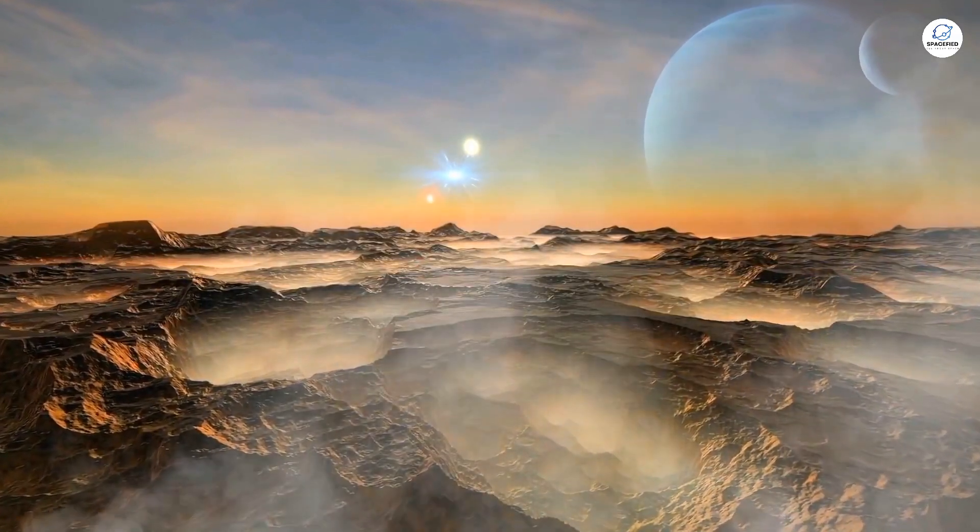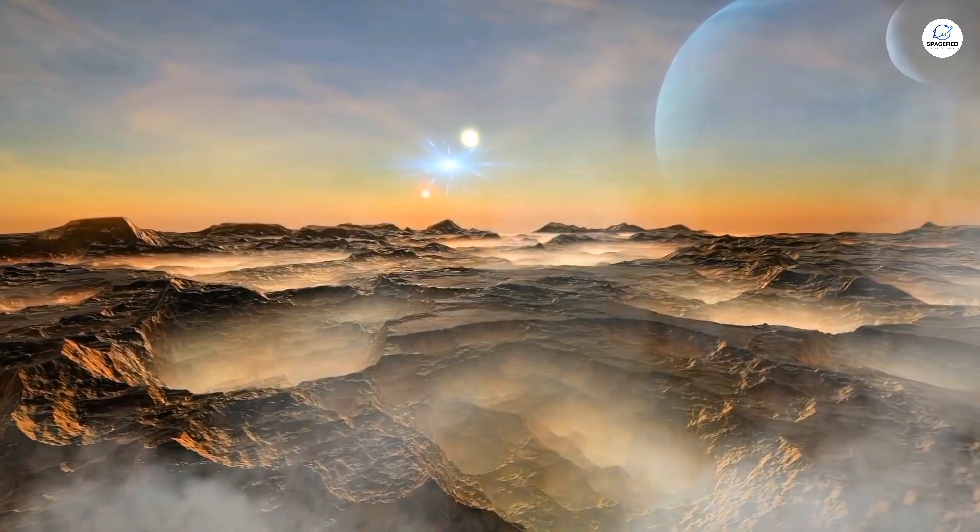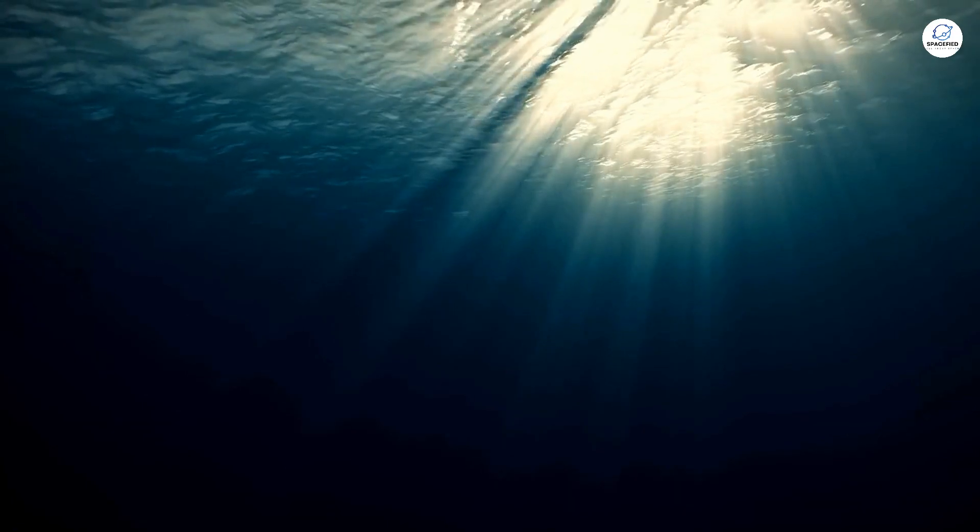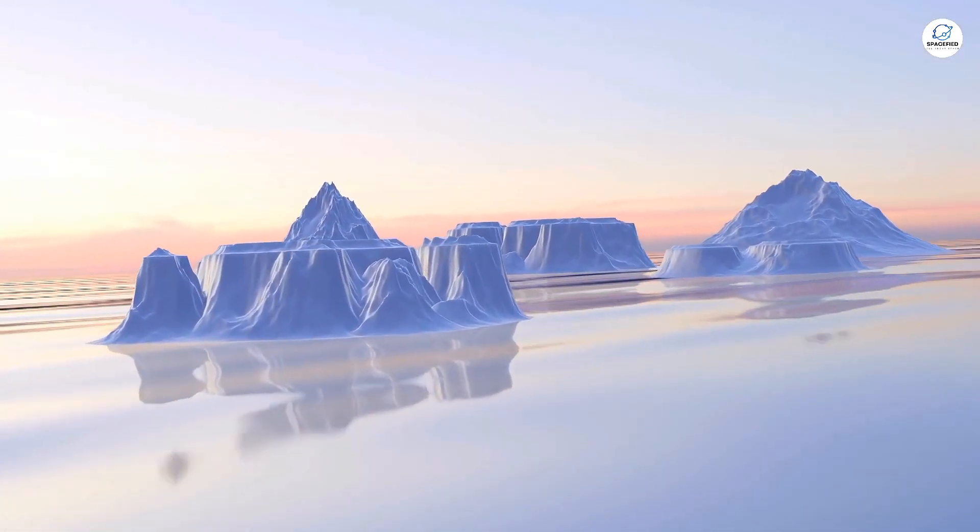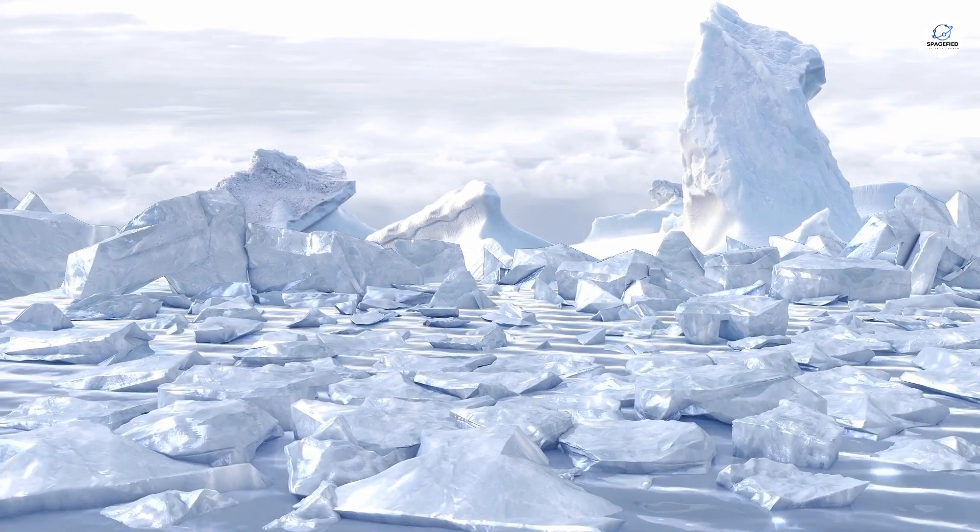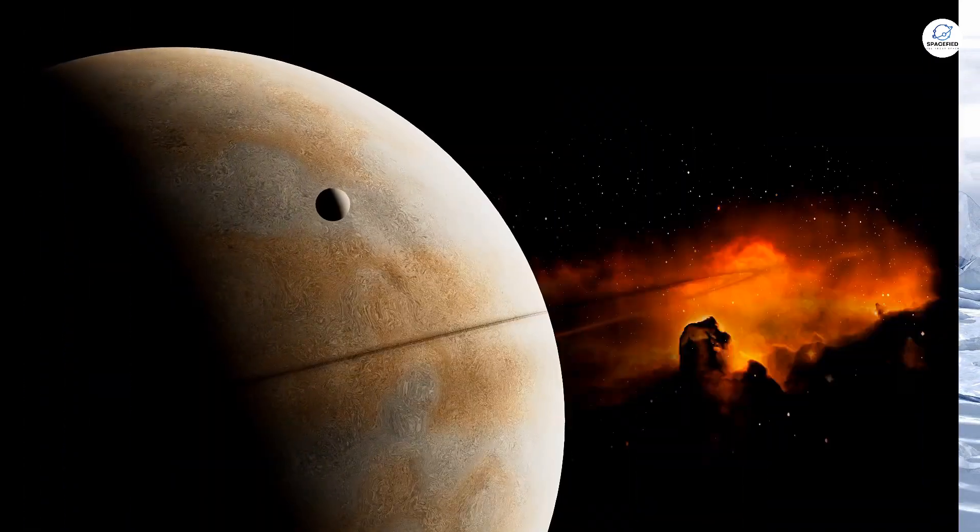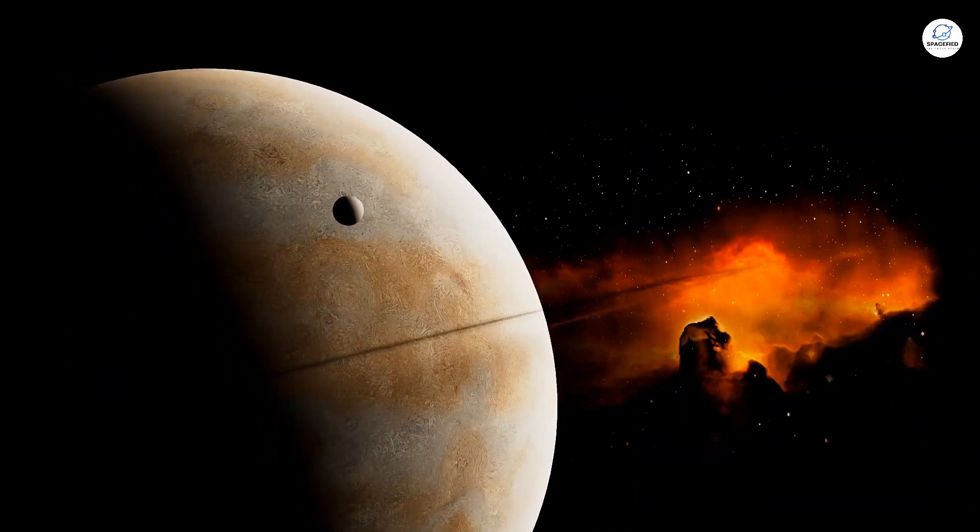GJ 1214b's extreme temperatures and pressures mean its water might exist in exotic states, like supercritical fluid, or even Ice 7, a form of ice that's hotter than boiling water. It's a fascinating, if not terrifying, glimpse into the diversity of planets in our universe.